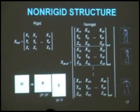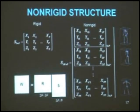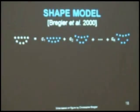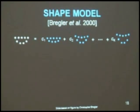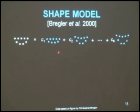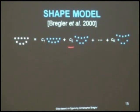Bregler said you can't solve this problem in the general case, but if you take certain restrictive assumptions about the structure, then you can. His restrictive assumption is that the structure at any given time is a linear addition of certain basis structures. The structure at any given other time is also a linear addition of those same basis structures. Only the coefficients will change, not the basis.